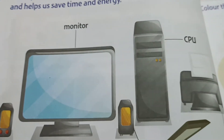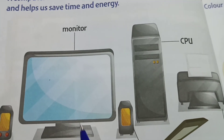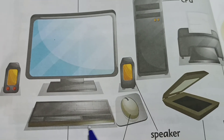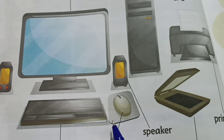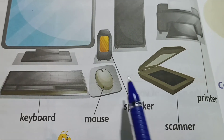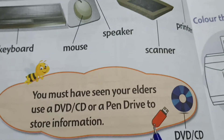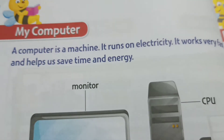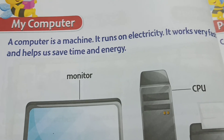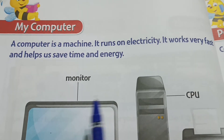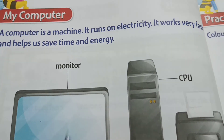So what are the major parts of the computer? Monitor, CPU, keyboard, and mouse. And what is this? Printer, scanner, speaker, pen drive, and DVD. So this is the computer. A computer is a machine. It runs on electricity. It works very fast and helps us save time and energy.